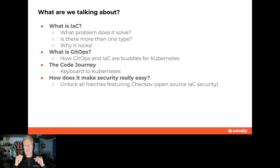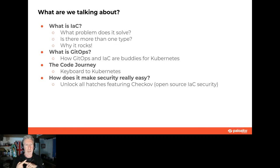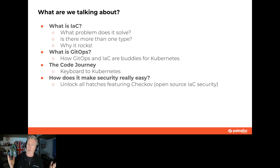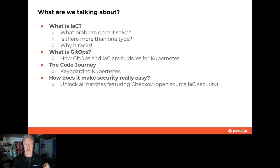Let's talk about what we're going to cover: What is infrastructure as code? What problems are we trying to solve with it? How many different types are there? Why does it align well with GitOps, particularly in the Kubernetes space? I'm going to talk about the code journey because I need that context to discuss where we apply security throughout — at the different levels, or in this case, I'm going to call them hatches.